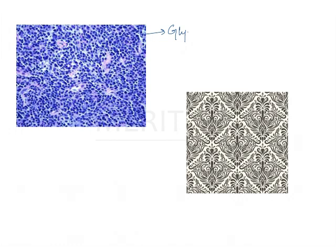Looking at the image, you can see the cells are hyperchromatic and you can hardly see any cytoplasm within the cell. The cytoplasm is clear, and these cells are glycogen positive but diastase negative. The characteristic arrangement of these cells is called the filigree pattern, which is the pathognomonic histopathological picture of Ewing sarcoma.